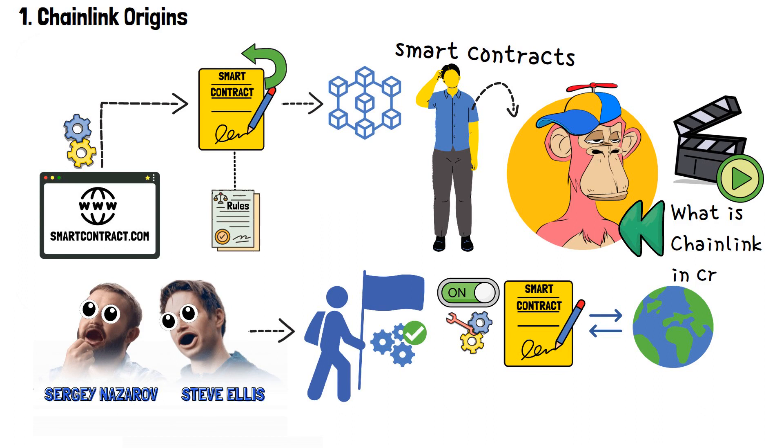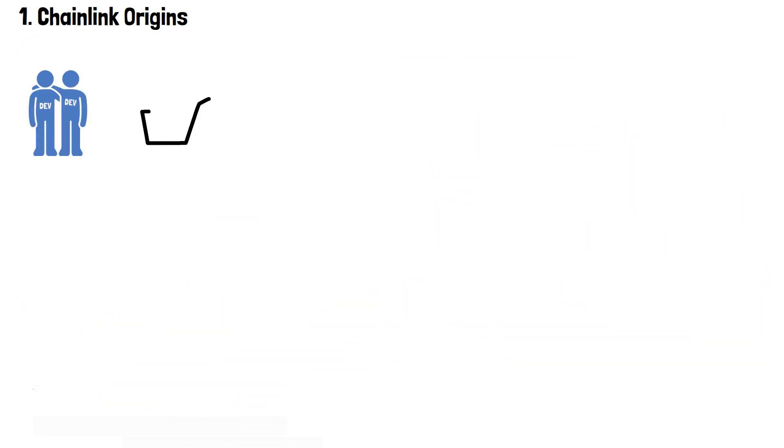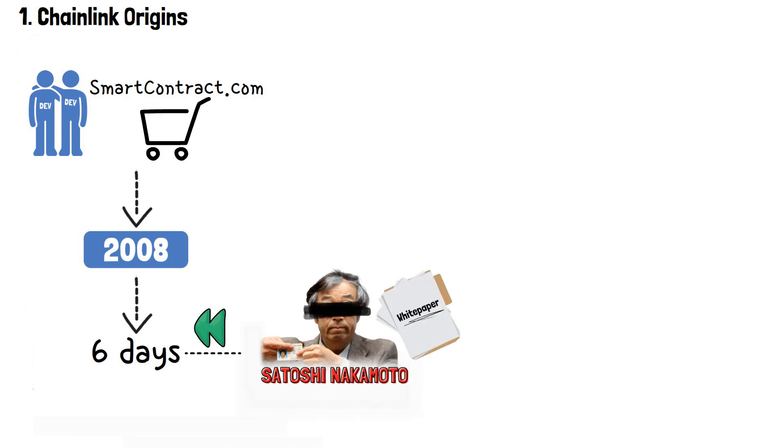Alright, back to answering what is chainlink in crypto. The duo bought and registered the domain of smartcontract.com back in 2008. To be even more precise, this happened 6 days prior to Satoshi Nakamoto publishing their famous Bitcoin whitepaper. As you can see, they were early into the game.